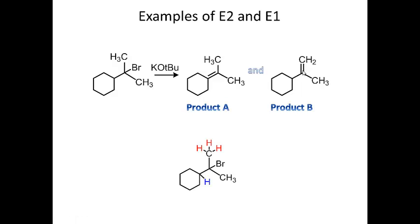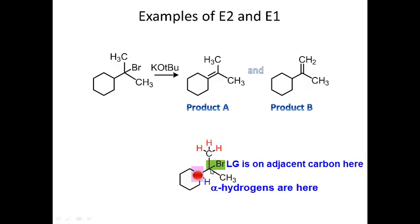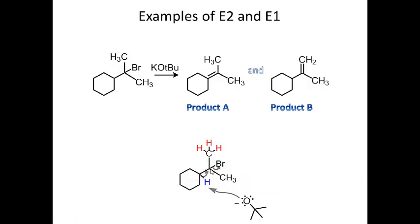Let's look at the formation of product A. I have alpha protons here as well as here. Alpha protons are the protons on the carbon adjacent to the carbon where the leaving group is. The leaving group is here, and the alpha proton is on this adjacent carbon. To form product A, the base comes in and pulls off this proton, these electrons come here to form my pi bond, and then I lose bromine as my leaving group.